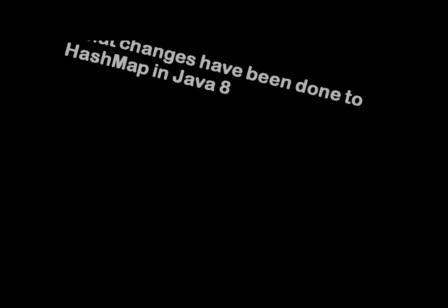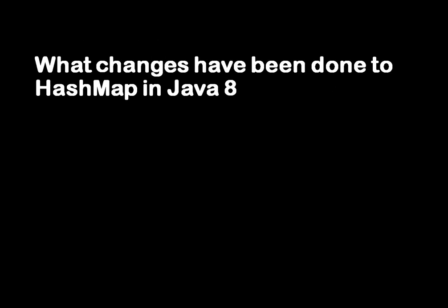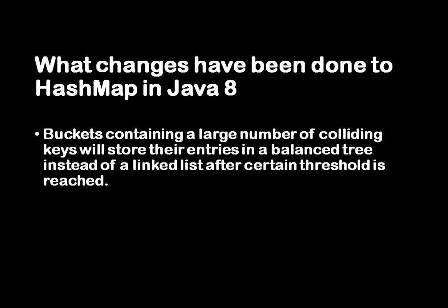Next question: how does HashMap work in Java 8, or what enhancements have been done to HashMap in Java 8? Java 8 internally uses buckets — a hash code is calculated on the key, an index is calculated, and it is placed in the bucket. The enhancement is that after a certain threshold, if all keys are residing at the same bucket index, instead of a linked list, HashMap now uses a balanced tree. So instead of traversing each object in a linked list, it now uses a balanced tree.